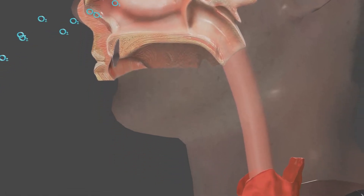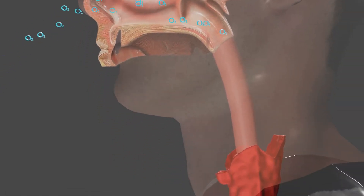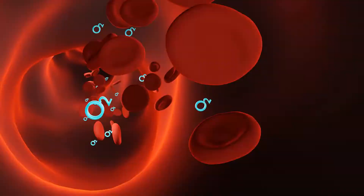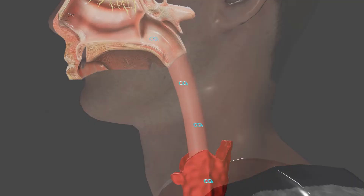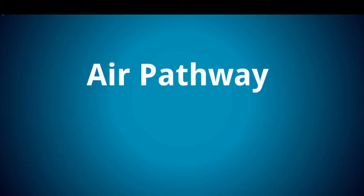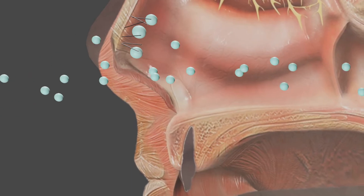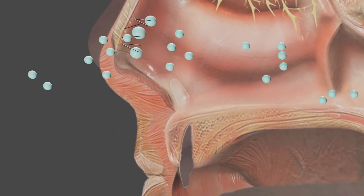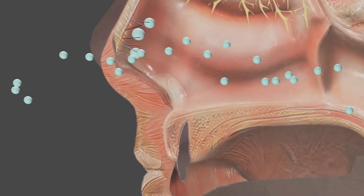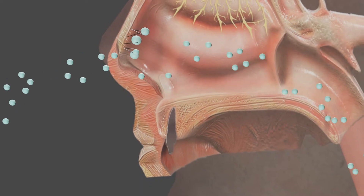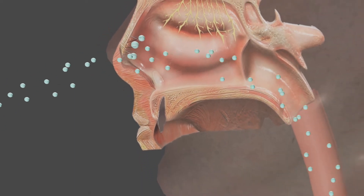Respiration is the movement of oxygen from the outside environment to the cells and the removal of carbon dioxide to the environment. Air enters the nasal cavity through the nostril, where larger dust particles are trapped by hair and mucus. While passing through the nasal cavity, air becomes moist, warm, and filtered of smaller foreign particles by the mucous membrane.